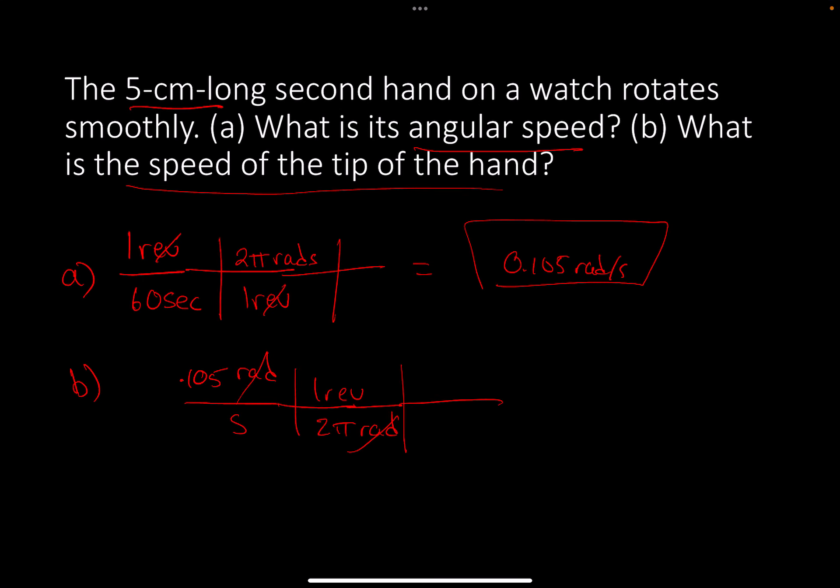Then I want to convert using what we know - it's a 5 centimeter long hand. One revolution is a circle. The circumference of a circle is 2πr. So that's going to equal 2π times r, which is 5 centimeters, or 0.05 meters. Then you get the answer to be 0.00524 meters per second.